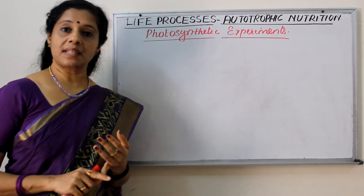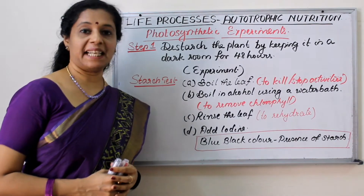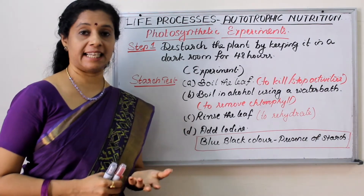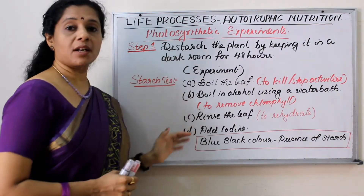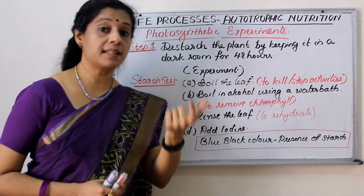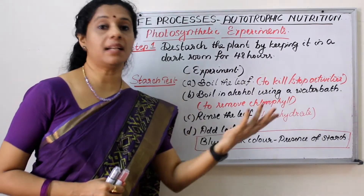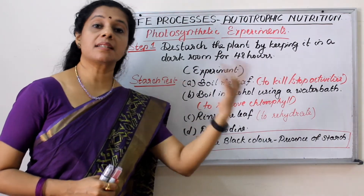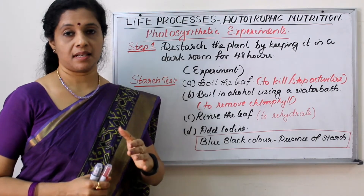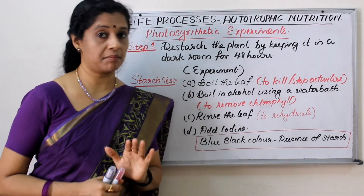First let us see carbon dioxide. When we do a photosynthetic experiment, whether it is for carbon dioxide, chlorophyll or sunlight, certain steps are common. How do we know that photosynthesis has taken place or not? We have to see the final product. If starch is produced, photosynthesis has taken place. If starch is not produced, photosynthesis has not taken place.